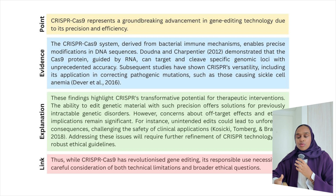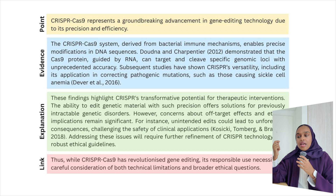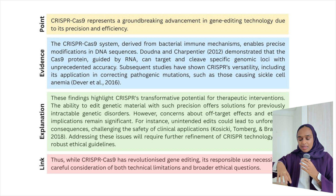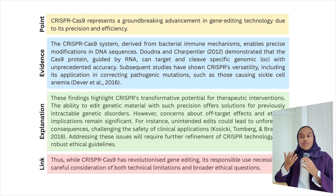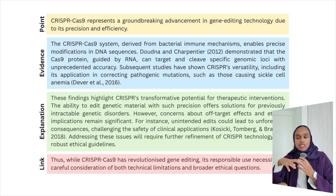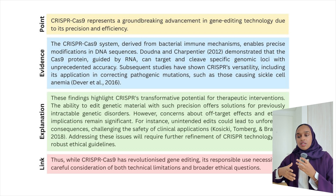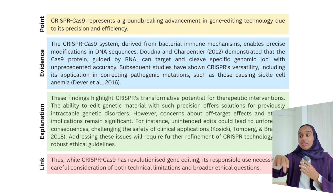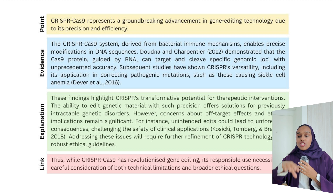Moving on to the evidence — I'm talking about where the findings come from. This enables precise modifications in DNA sequences, showing why CRISPR is special. Then I say these authors have demonstrated — and you can see how I cleanly and smoothly input a citation. People tend to add citations quite harshly, and that takes away from the flow. Here I've said it demonstrated that the protein guided by RNA can target and cleave specific genomic loci with unprecedented accuracy. Then subsequent studies have shown it's quite versatile, used for different things, with two references added, both still highlighting the groundbreaking advancement.